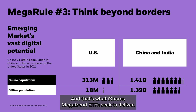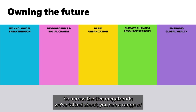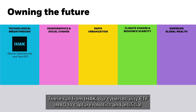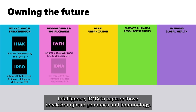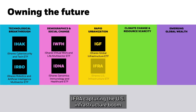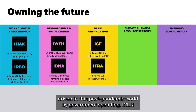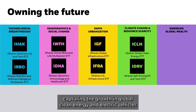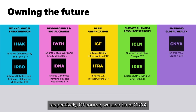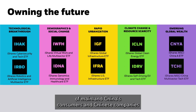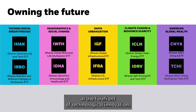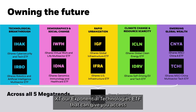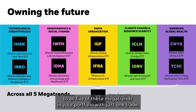Across the five megatrends, iShares offers a range of ETFs: iHack for cybersecurity, IRBO for robotics and artificial intelligence, iDNA for genomics and immunology breakthroughs, IFRA for the US infrastructure boom, iClean (ICLN) and iDrive (IDRV) capturing growth in global clean energy and electric vehicles. We also have CNYA and TCHI giving access to rising incomes of mainland China's consumers and Chinese tech innovators. And if you want to keep it simple, there's one ticker — iShares XT, our exponential technologies ETF — giving you access to all five megatrends with just one trade.